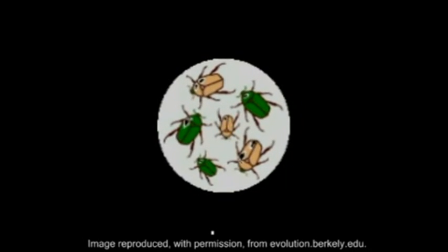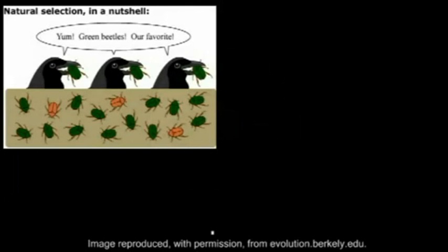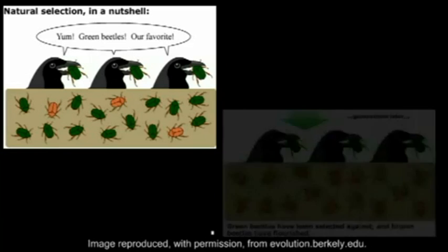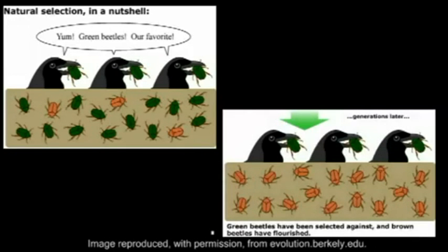Evolution can best be described as descent with modification. In a nutshell, what this means is that different individuals of the same species display different versions of a trait. Because in a given environment, some versions of a trait will make one more likely to survive and mate than others, the genetic composition of a population will change over time in response to its environment.